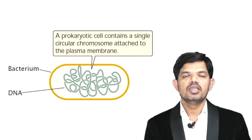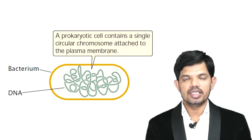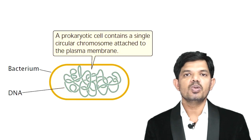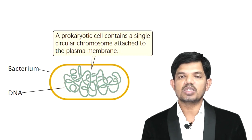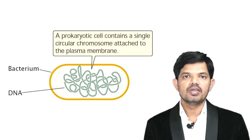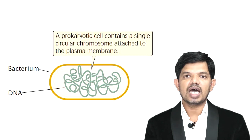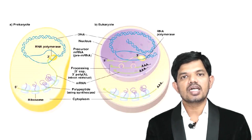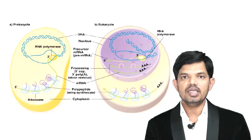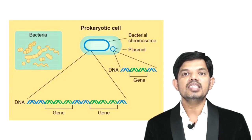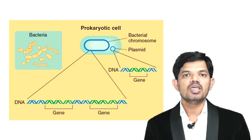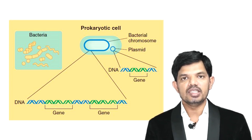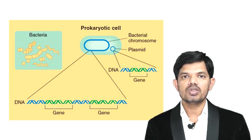Prokaryotes contain a single double-stranded circular DNA chromosome. This chromosome is present within the cytoplasm of the bacteria. Since prokaryotes don't contain any nucleus, the DNA is present directly in the cytoplasm, not within a nucleus. That's why transcription and translation are coupled processes in prokaryotes. This chromosome is present in a dense clump called the nucleoid, which is directly embedded within the cytoplasm and is not a membrane-bound structure.